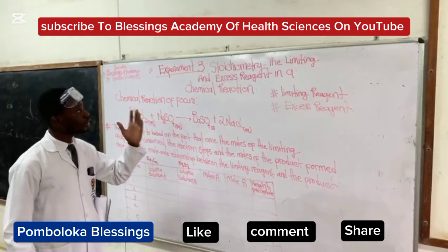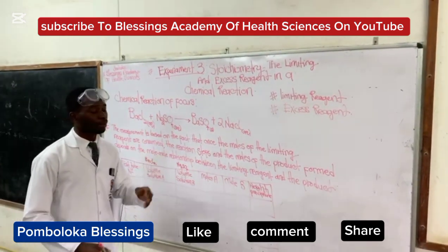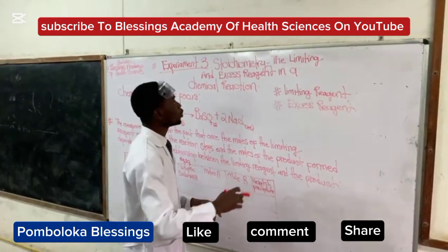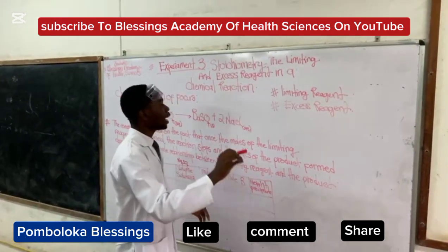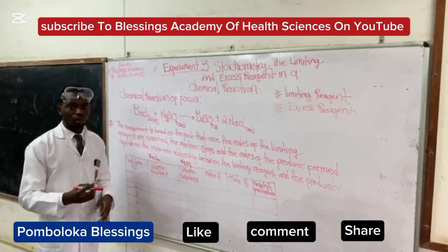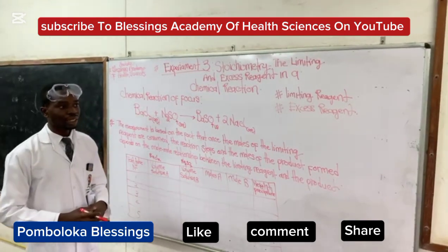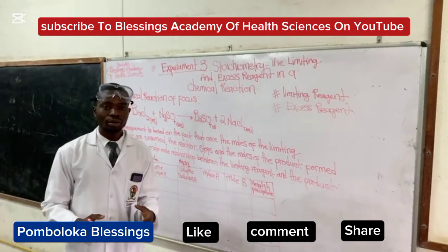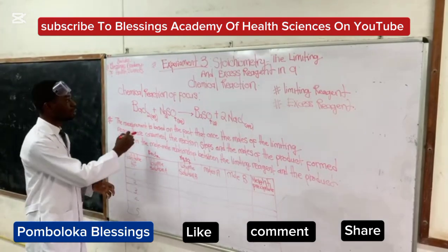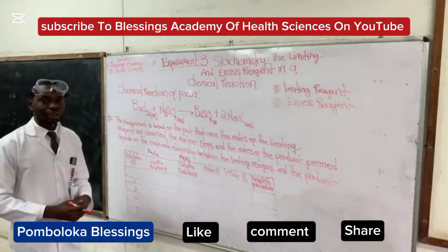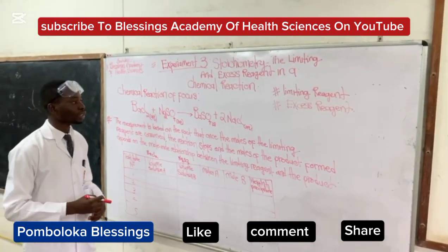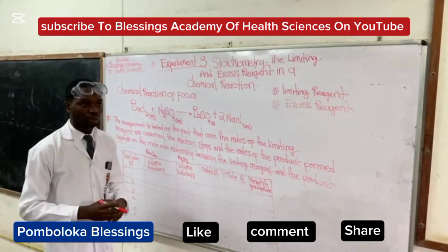When you get back to your lab manuals, much of what we're going to focus on is stoichiometry, where we focus on the limiting and the excess reagent of a chemical reaction. In this chemical reaction, we've been given two reactants. The first reactant is barium chloride reacting with sodium sulfate, giving us the product barium sulfate plus sodium chloride.